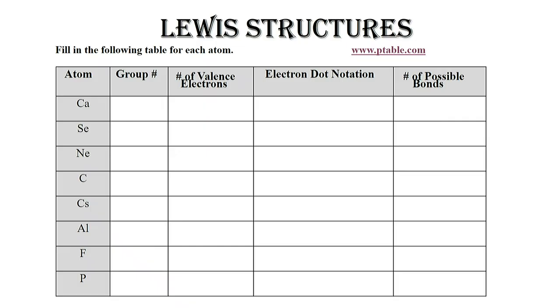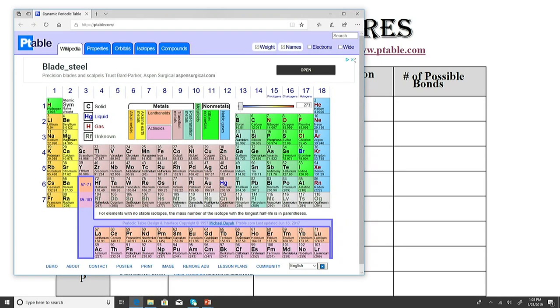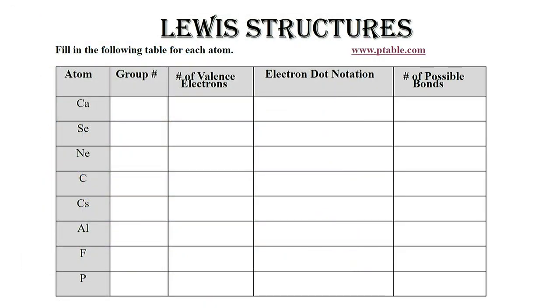Let's take a look at neon. Neon is here, it's a noble gas, found in group eight. So that means neon is in group eight A.